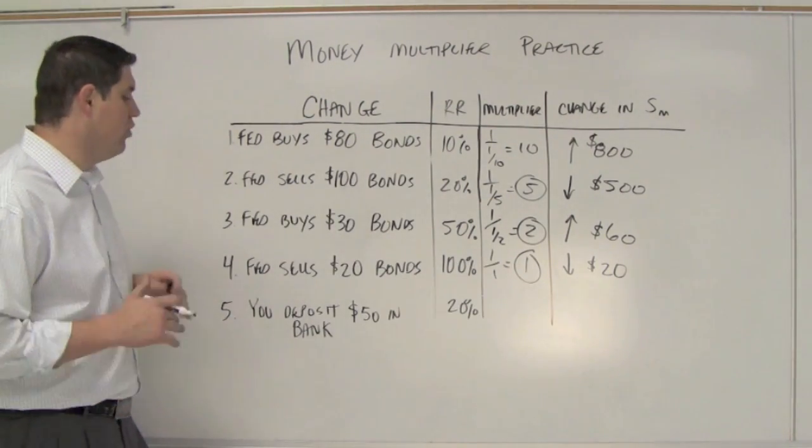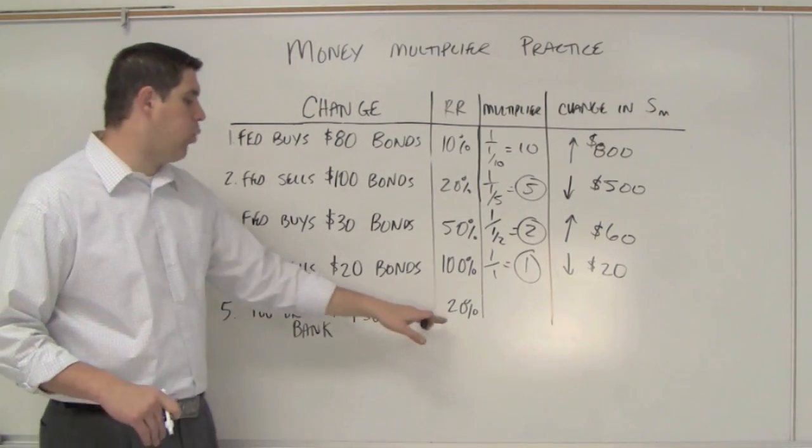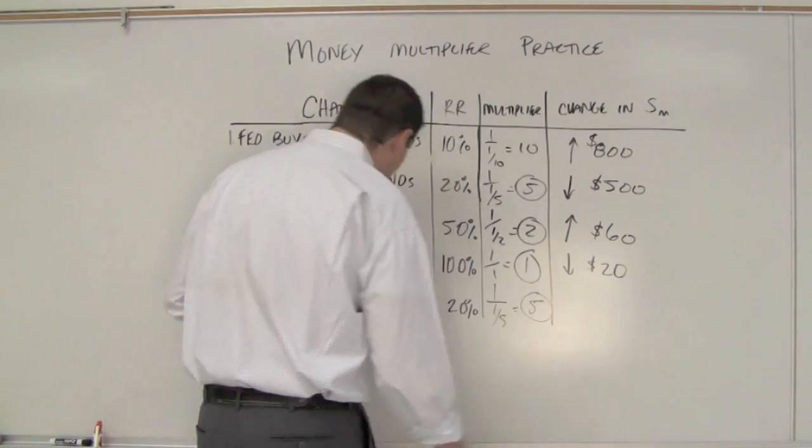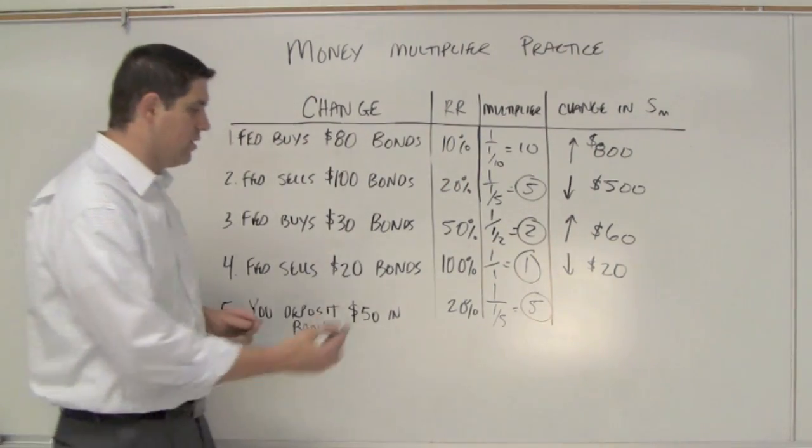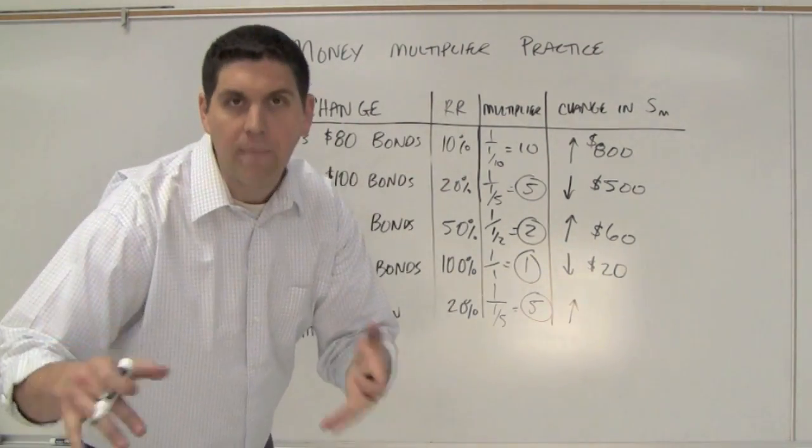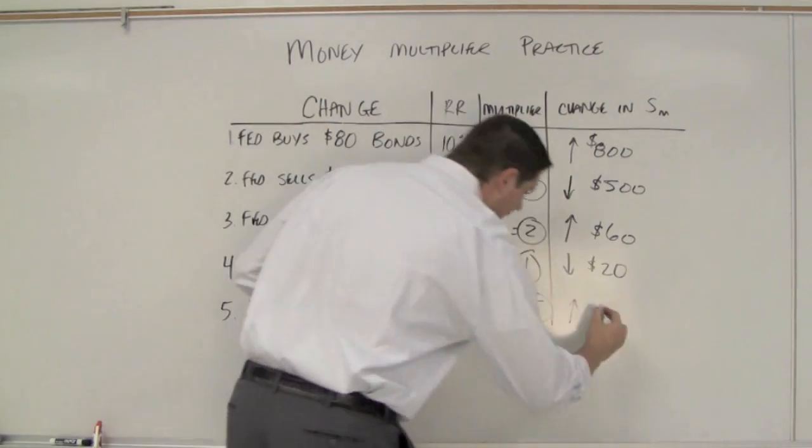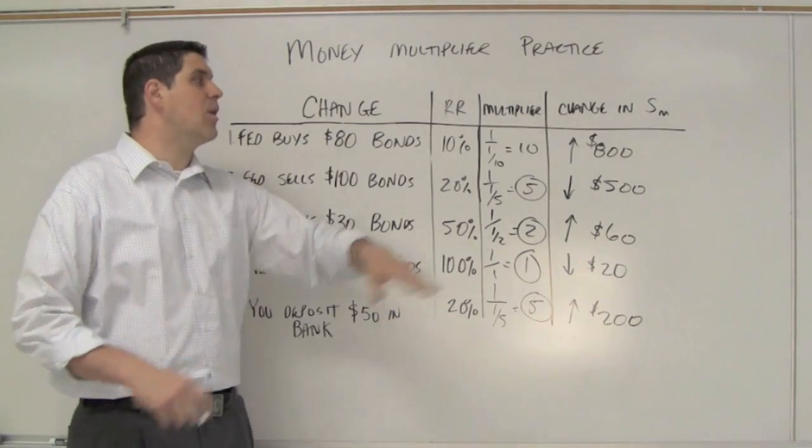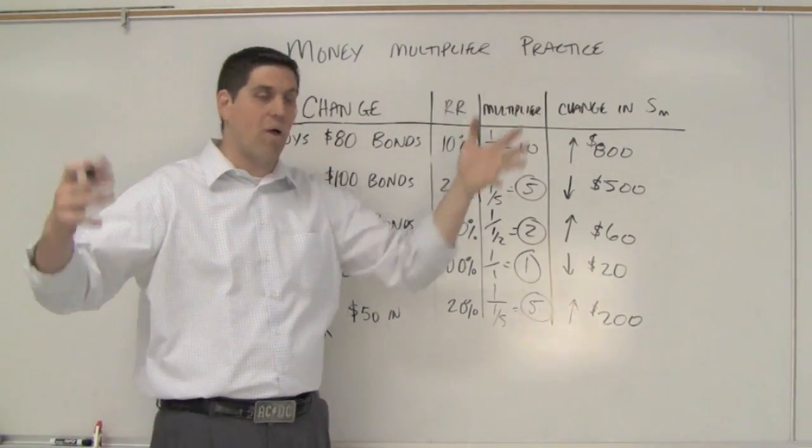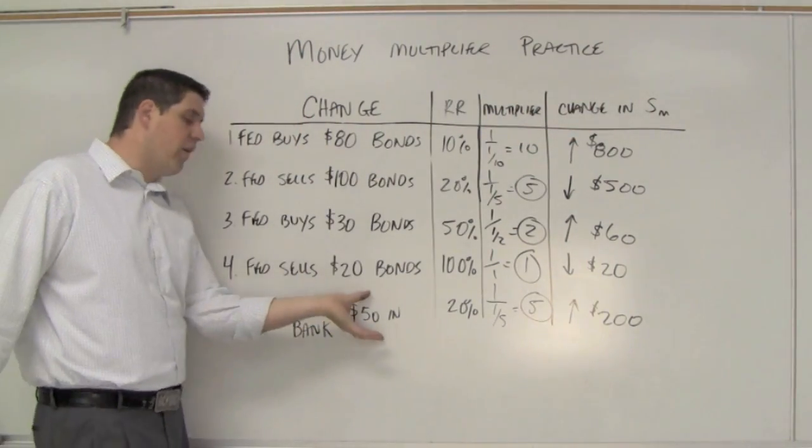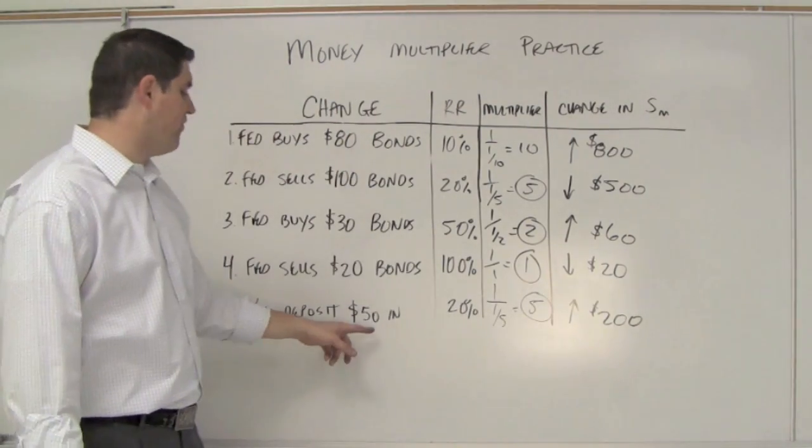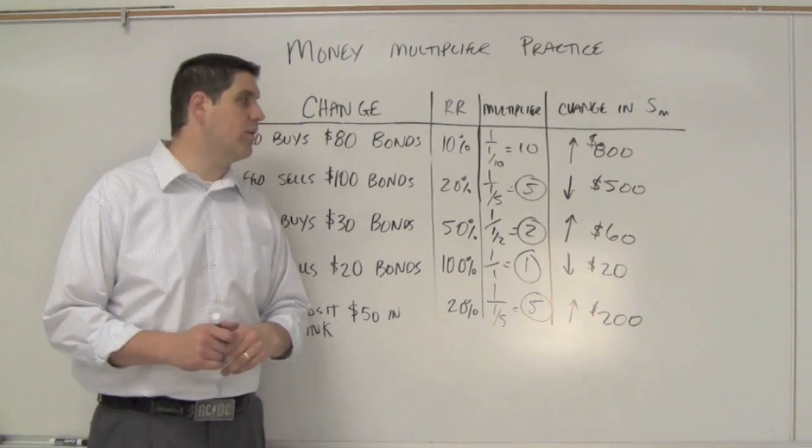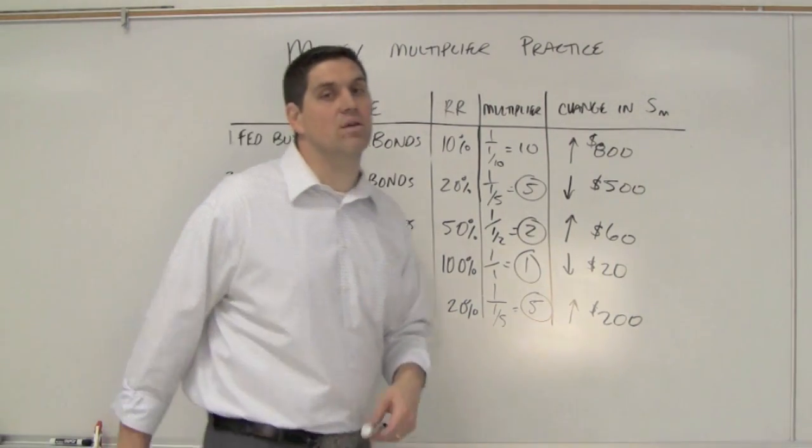How about this last one? If you deposit $50 in your bank, the reserve requirement is 20%, so it's 1 over 1/5, and the multiplier is 5. You're tempted to say 250 - this would increase by 250 - and you'd be wrong. It's not 250, it's only 200. How? The reason is we're asking what happens to the change in the money supply. The $50 was already in the money supply. I just multiplied 50 times 5 and subtracted out the original amount. That gives you $200. Hopefully this makes sense. Till next time.